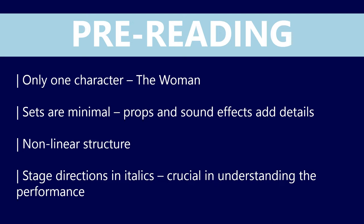Remember there is only one character in this text, only one actress on stage, and that is the woman, though she offers perspectives from a range of other characters and we'll be introduced to a few of those later on today, including Auntie Grace. The sets are really minimal, but props and sound effects will add lots of meaning and detail, particularly around the characters' thoughts and feelings and reactions to certain events. It is a non-linear structure, outlined through the sound effects of the chair scraping across the wooden floor, the footsteps, the door closing, and the clock ticking — that's our cue to know that we're going to the past.